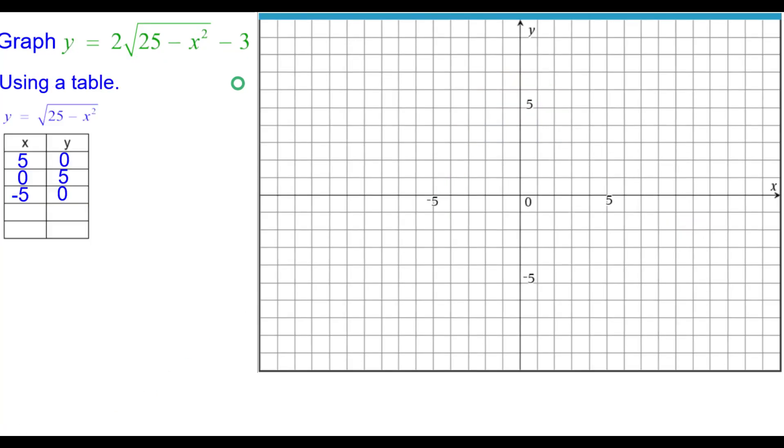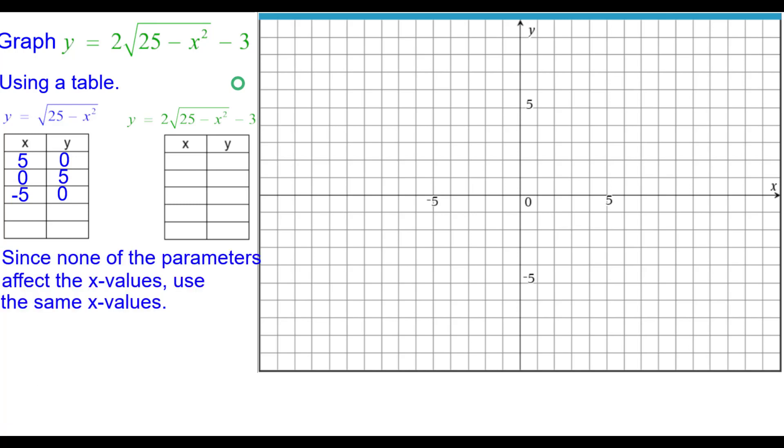Second way, using a table. Here are three points that are normally on the semicircle. None of the parameters affect the x values, so we'll use the same exact x values.